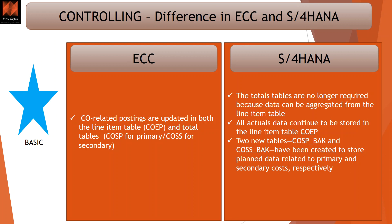The very basic point is CO-related postings. When we post CO documents in ECC, they are generally updated in COEP, and the totals tables for secondary postings are COSS and for primary it's COSP. However, with S4HANA, the totals tables are no longer leading because data can be aggregated from the line item table itself. All actuals can continue to be stored in COEP, and the new tables COSP_BACK and COSS_BACK have been created to store plan data. The line item actual data also goes to the ACDOCA table, which is the core accounting table of S4HANA.